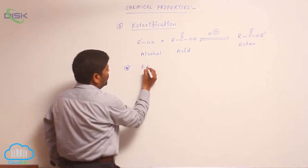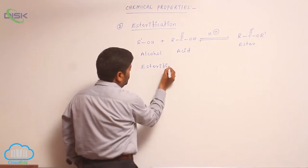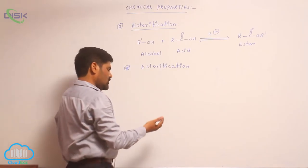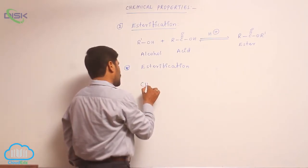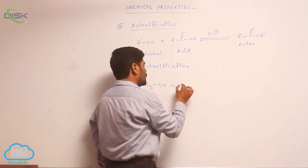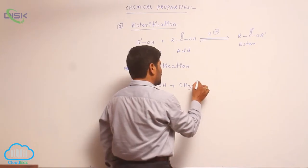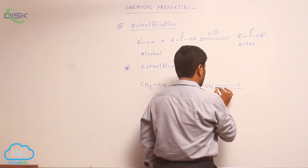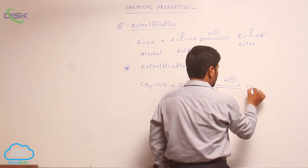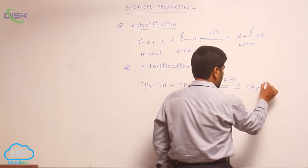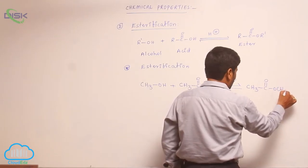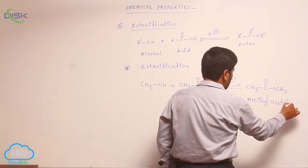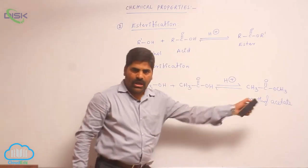What is the esterification process? When methyl alcohol reacts with acetic acid in the presence of an acid medium, it forms CH₃-C(=O)-O-CH₃, known as methyl acetate.